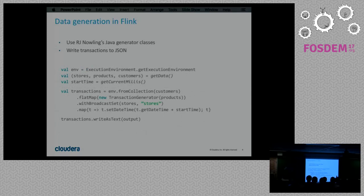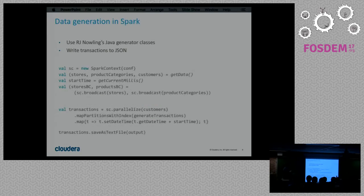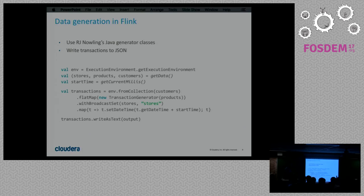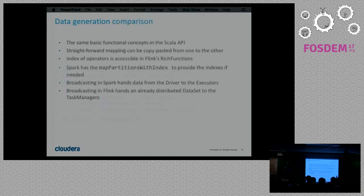Let's switch to Flink. I also generate the ground truth there. One thing changes: in Spark we called the basis of building the job graph the Spark context; now we call it the execution environment. In Flink we use the rich function interface for extra information on our functions, whereas Spark uses another solution. Broadcast variables are used slightly differently, but the basics — having a mapping — are on the same level.